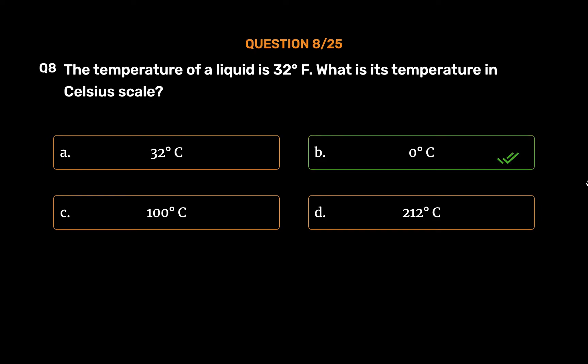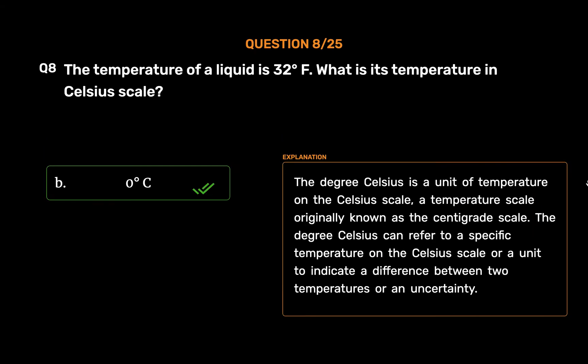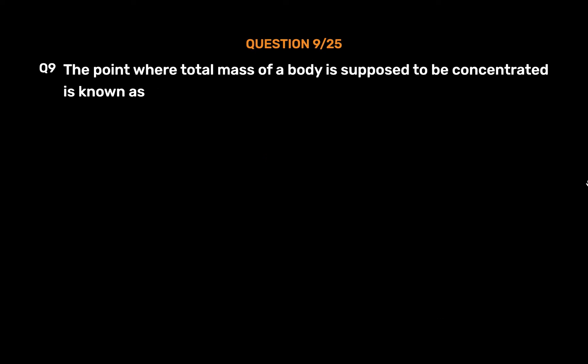The correct answer is Option B: 0 degrees Celsius. The degree Celsius is a unit of temperature on the Celsius scale, a temperature scale originally known as the centigrade scale. The degree Celsius can refer to a specific temperature on the Celsius scale or a unit to indicate a difference between two temperatures or an uncertainty.